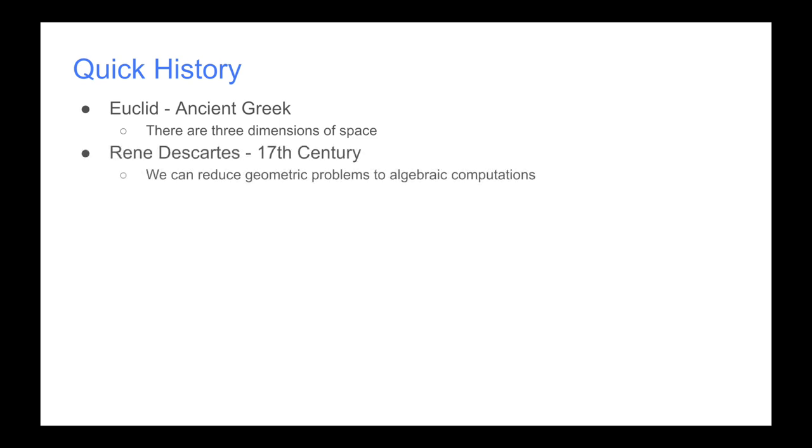Very quick history. It kind of all started with Euclid in ancient Greece, where he saw that reality is made up of three dimensions of space. Then, in the 17th century, we have René Descartes, who said we can reduce geometric problems to algebraic computations. And that was a very big idea. And then we'll see from Leibniz to, more recently, Peano, where we formalized the whole study of linear algebra.